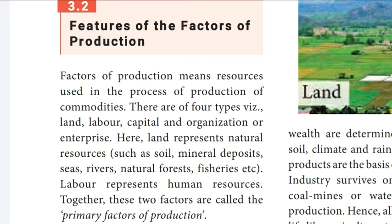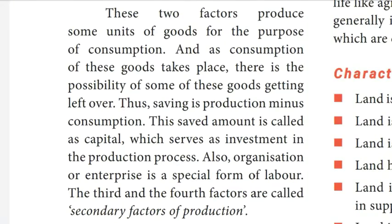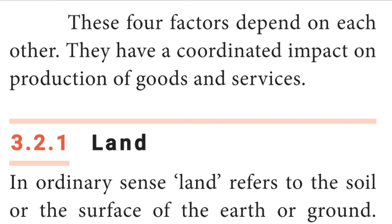Land represents natural resources such as soil, mineral deposits, seas, rivers, natural forests, fisheries, etc. Labor represents human resources. Together, these two factors are called the primary factors of production. These two factors produce some units of goods for consumption. The saving, which is production minus consumption, is called capital, which serves as investment in the production process. Organization or entrepreneur is a special form of labor. The third and fourth factors are called secondary factors of production. These factors depend on each other and have a coordinated impact on production.